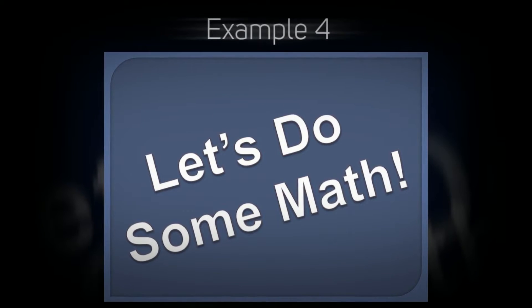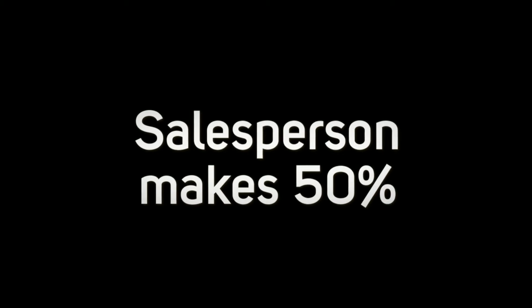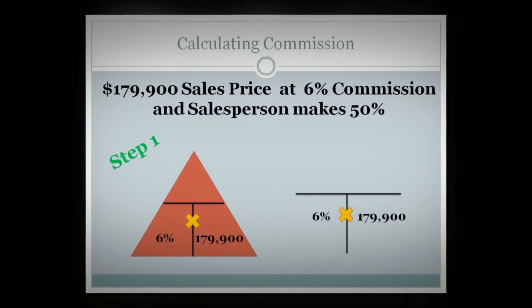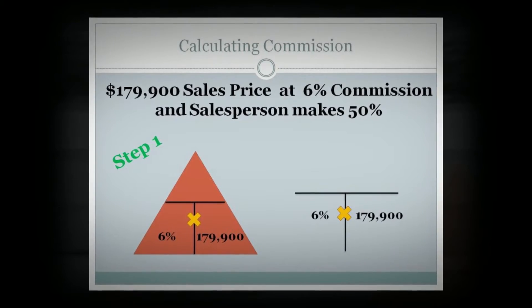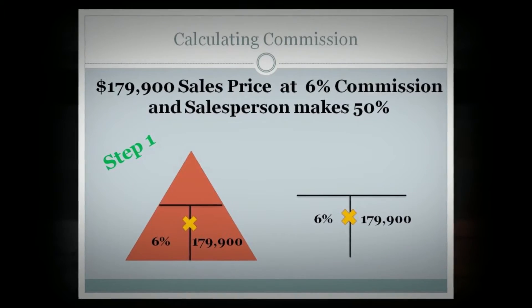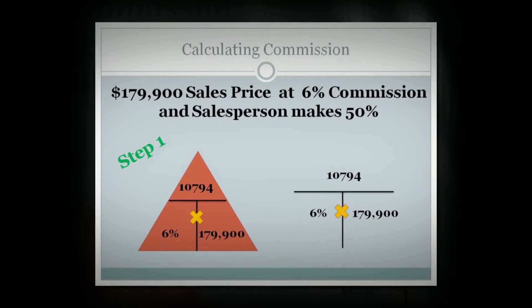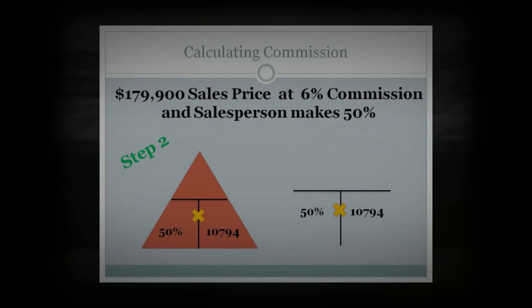Example four: you have a sales price of $179,900 at 6% commission. The salesperson makes 50% of that commission — how much does the salesperson get paid? This is actually a two-step process, so you'd have two T's or two triangles. The first one would have $179,900 in the bottom right-hand and 6% in the bottom left-hand. You multiply $179,900 times 6% and that gives you a part or portion of $10,794.